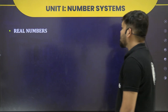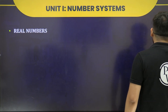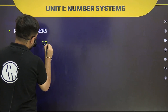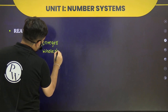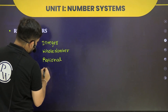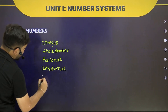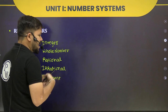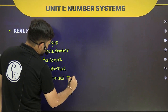First, Unit One: Real Numbers. In this chapter, we cover the different number systems — what integers mean, whole numbers, rational numbers, and irrational numbers. We will revise all those things. Also, how to prove the irrationality concept, and there is the Fundamental Theorem of Arithmetic — the relationship between prime numbers and divisibility.